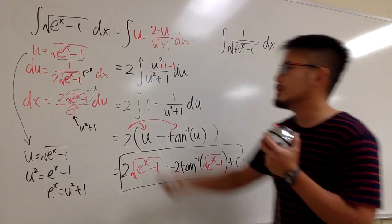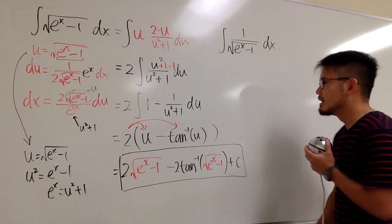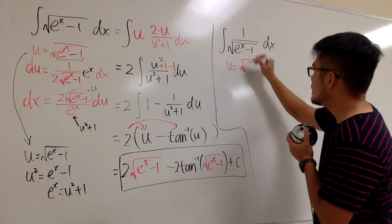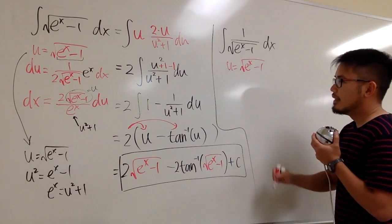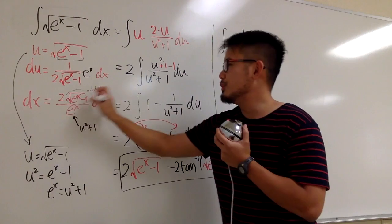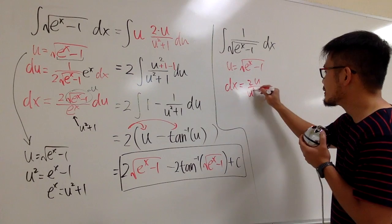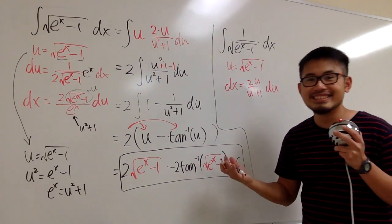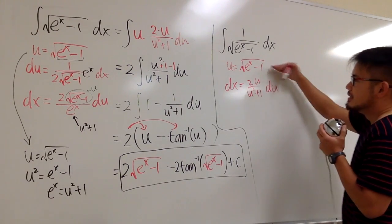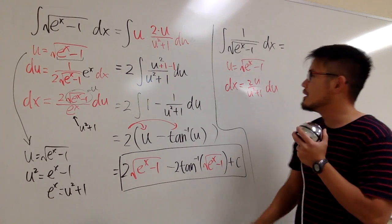Now let's move to the second integral — same exact approach. We let u equal the square root of e to the x minus 1, and dx equals 2u over u squared plus 1, du. That's why I paired these two integrals together in this integral battle.